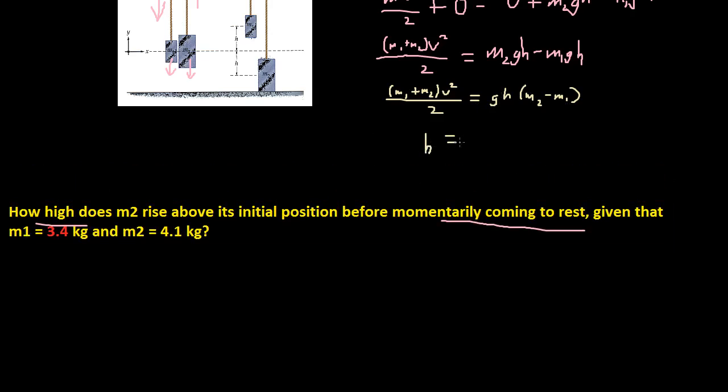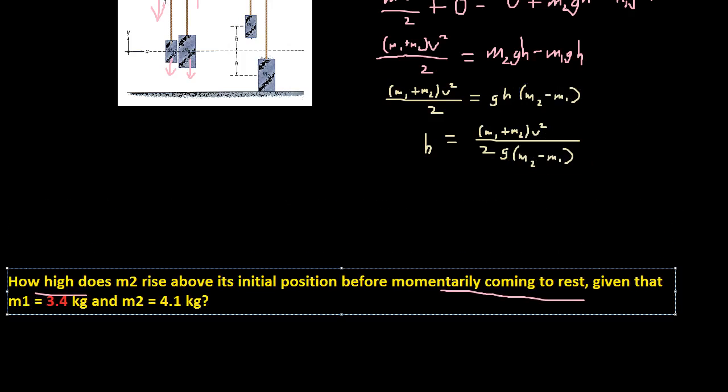So H is equal to that, let me just move 2 over, so we're just dividing each side by G and M2 minus M1. So knowing that, let's plug in our values. So H is equal to, M1 plus M2 is 3.4 plus 4.1.